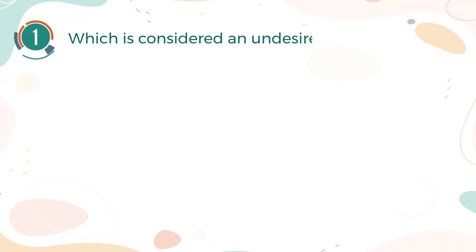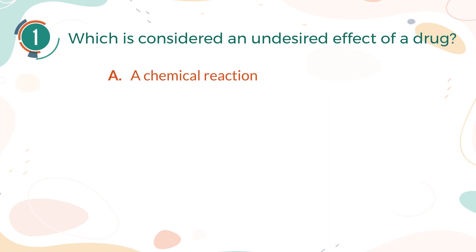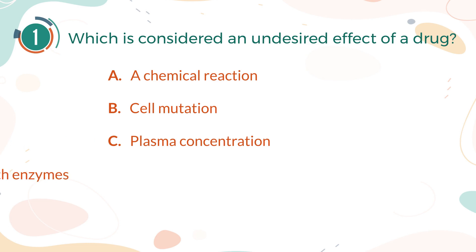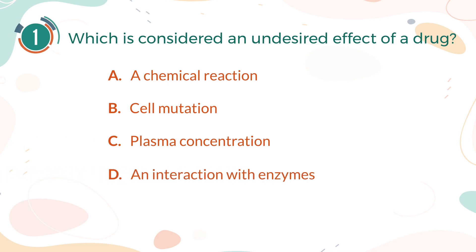Number 1. Which is considered an undesired effect of a drug? A. A chemical reaction. B. Cell mutation. C. Plasma concentration. D. An interaction with enzymes.